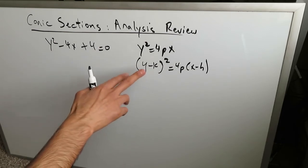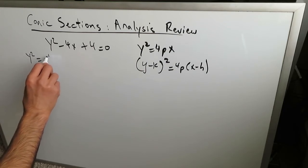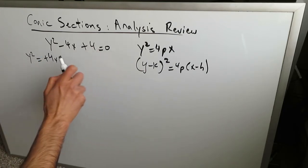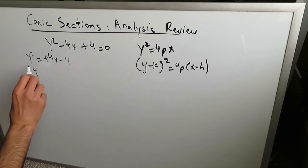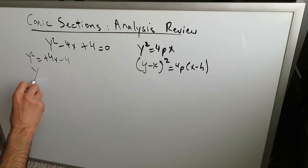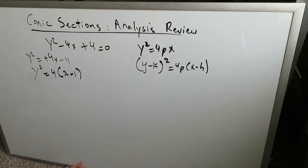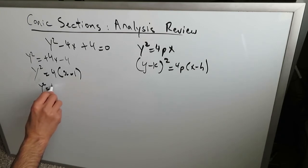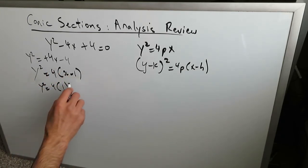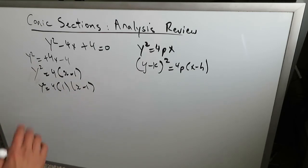You want to convert this into one of these forms. If you take the −4x on the other side, you get y² = 4x − 4. You then rearrange everything into the proper format. You would get y² = 4(x − 1). To identify p, you write y² = 4(1)(x − 1), so 4p = 4 and p = 1. This is really (y − 0)², meaning only the x component of the vertex has translated.